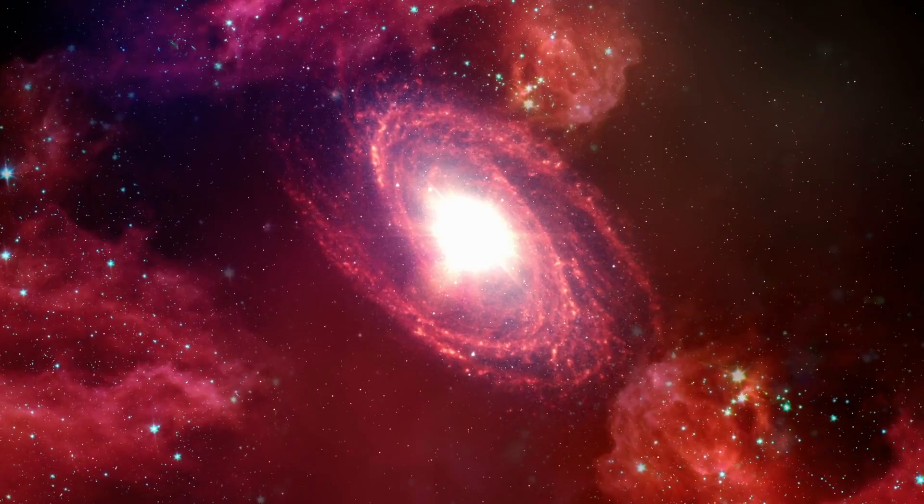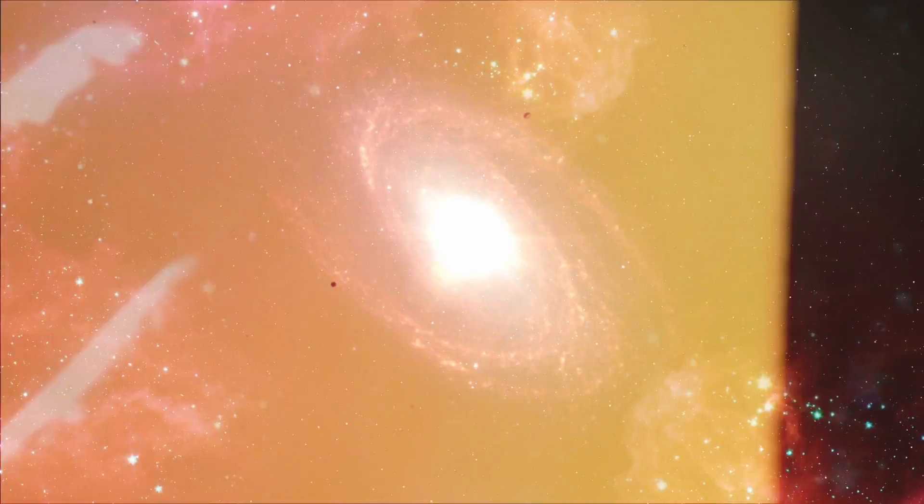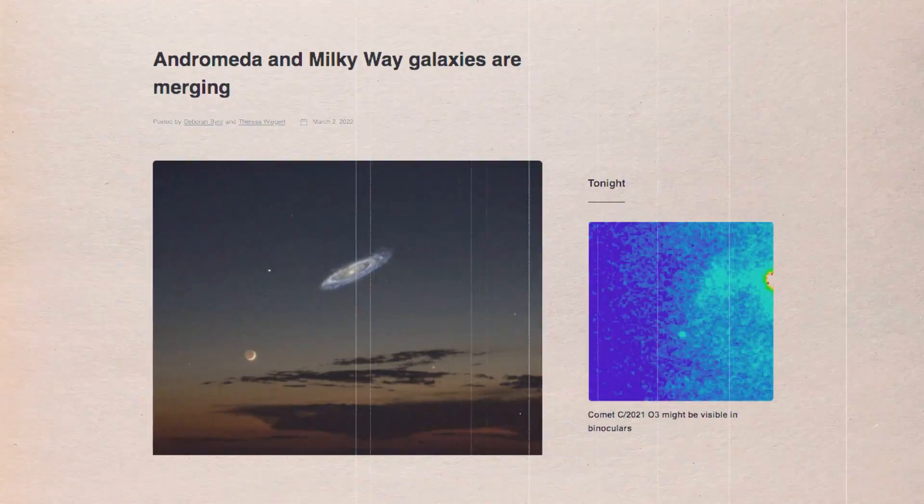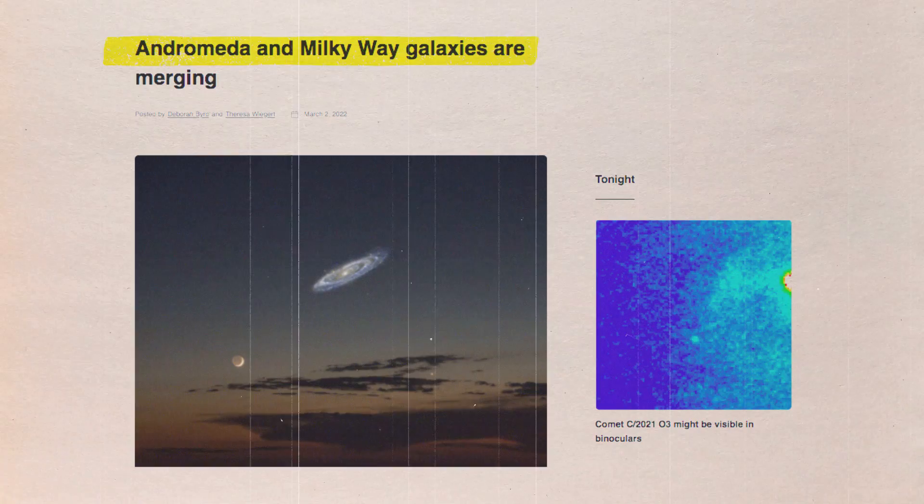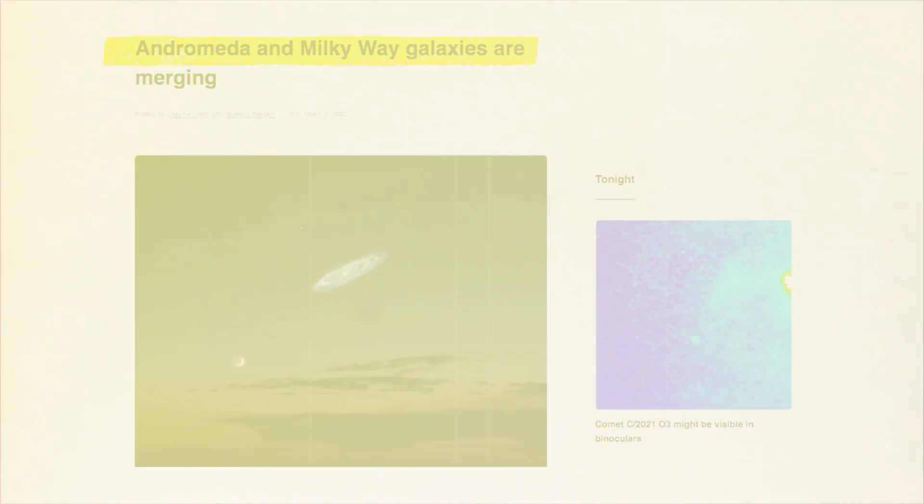Because the Milky Way and Andromeda are slated to meet in around 5 billion years, give or take, the news that the Milky Way and Andromeda are colliding is not usually a highly headline-grabbing piece of information.